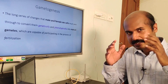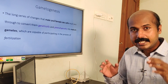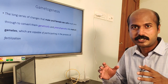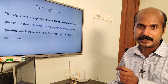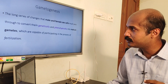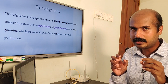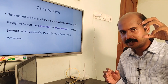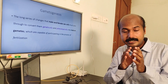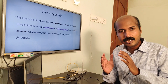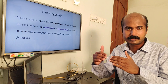What is the definition of gametogenesis? It is a process — a long series of changes — in which the male and female sex cells are converted into genetically and phenotypically different mature gametes, which are capable of participating in fertilization. Two key words here are genetically and phenotypically different. So the structure differs and it is genetically different. You have some parent germ cells that will differentiate into functioning gametes.